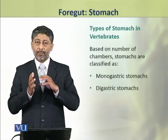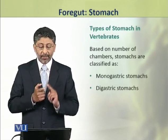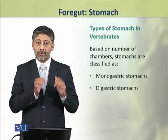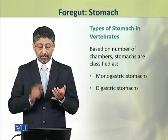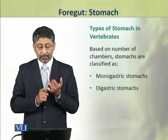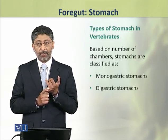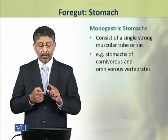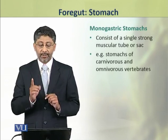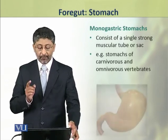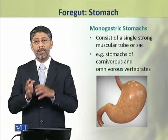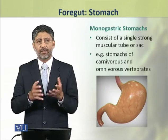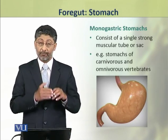Vertebrates mein stomachs ki do major types pai jati hain, which are based on the number of chambers of the stomach. Stomachs may be monogastric stomachs or digastric stomachs. Monogastric stomachs consist of a single strong muscular tube or sac — for example, the stomachs found in carnivores and omnivores.